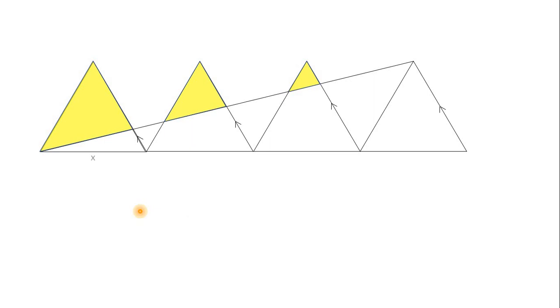Let us suppose the side of the equilateral triangle is X. Then this side is X, this is X, this is X, and this is X. Now removing the unnecessary parts.